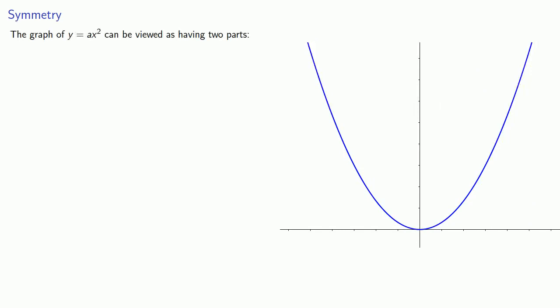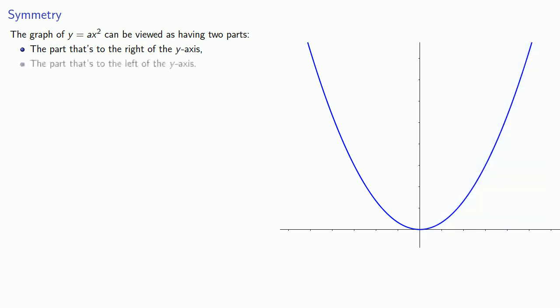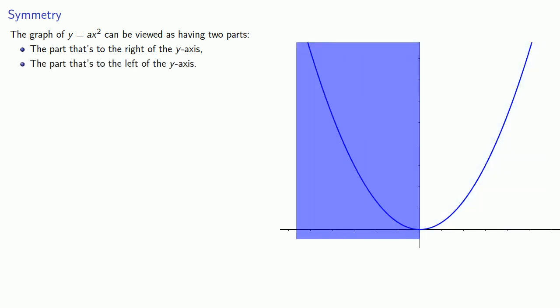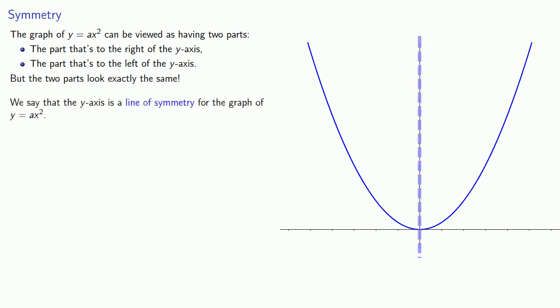The graph of y equals ax squared can be viewed as having two parts: the part to the right of the y-axis and the part to the left of the y-axis. But the two parts look exactly the same. We say that the y-axis is a line of symmetry for the graph of y equals ax squared.